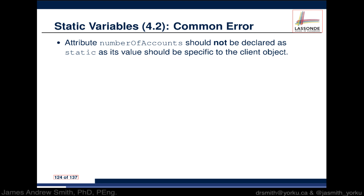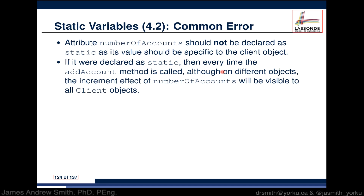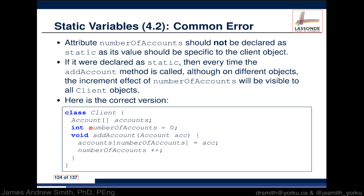The attribute numberOfAccounts should not be declared as static because its value should be specific to each client object. If it's declared static, every time the addAccount method is called on any object, the increment to numberOfAccounts is visible to all client objects. In a banking situation, you do not want one client's information linked to another's. The corrected version simply removes the static keyword, making numberOfAccounts a regular integer local to each instance.